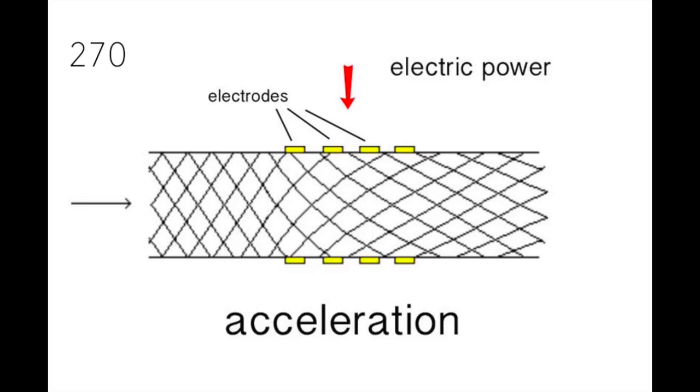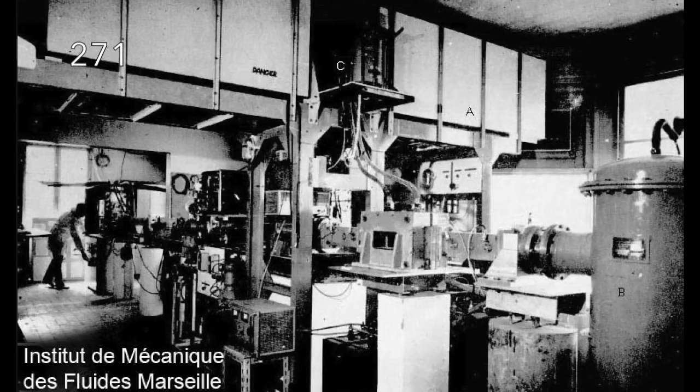Imagine a supersonic flow driven through a MHD Accelerator. The magnetic field is perpendicular to the plane of the figure. On this drawing, I have figured the corresponding Mach lines. From the middle of the 60s to the end of the 60s, my shock tube provided a 50 microsecond burst of argon at 10,000 degrees Kelvin, pressure 1 bar, velocity 2.7 km per second. The electrical conductivity was 3,000 mho per meter.